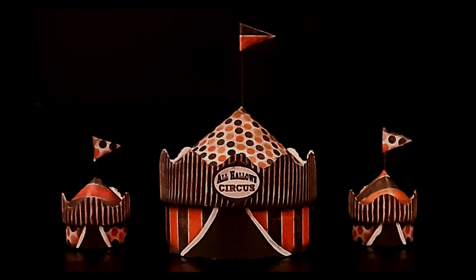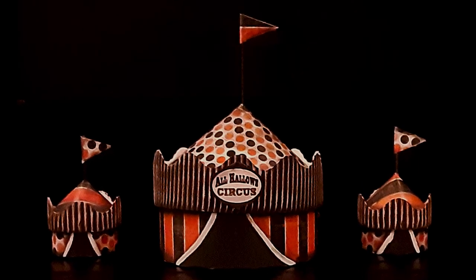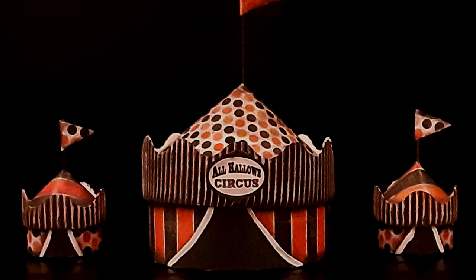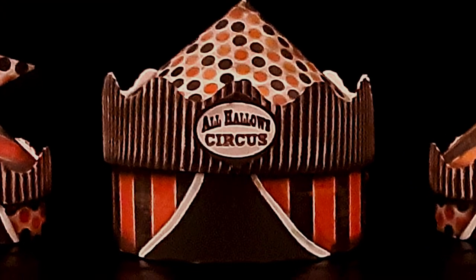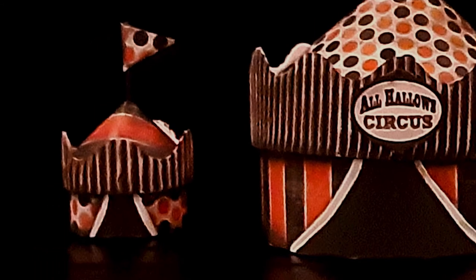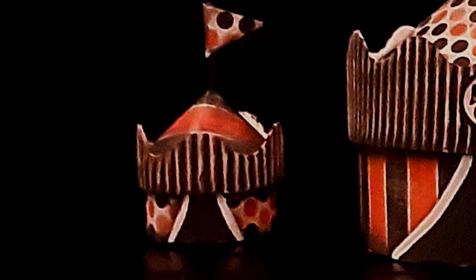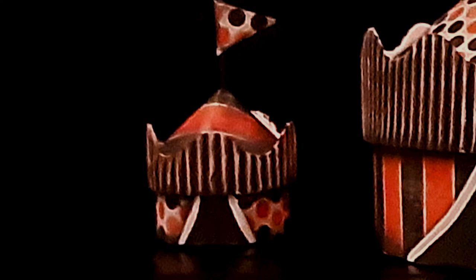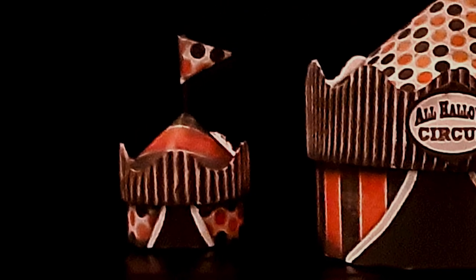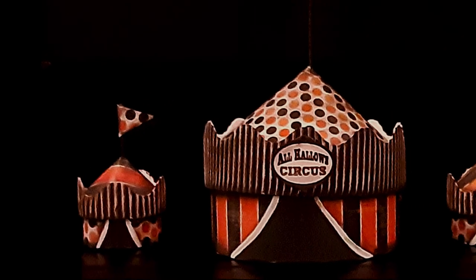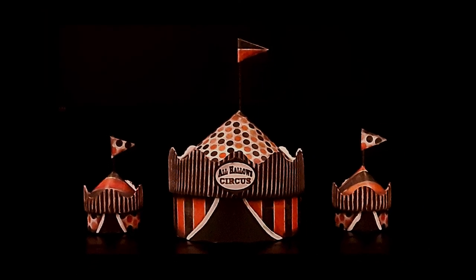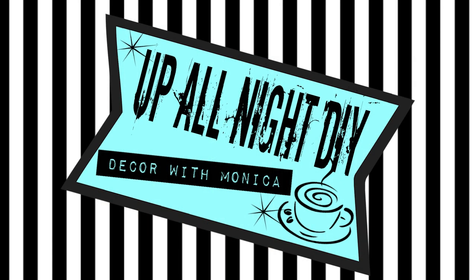I also outline the tent opening with white lines but I didn't get it on camera, sorry about that. I've been wanting to make these for a few years now. I'm so pleased with the way they turned out. They have that Ray Bradbury Something Wicked This Way Comes dark carnival thing going on, but you know, cuter. I hope you enjoyed watching. I sure had fun making my All Hollows circus tents. All supplies as well as links to the hosts and co-host channels and the playlist are in the description box. Stay creative my friends. Thanks for hanging with me. See you next time, Up All Night with Monica.